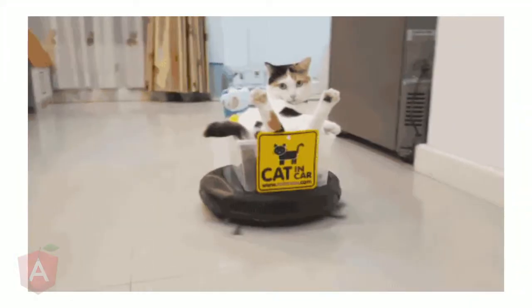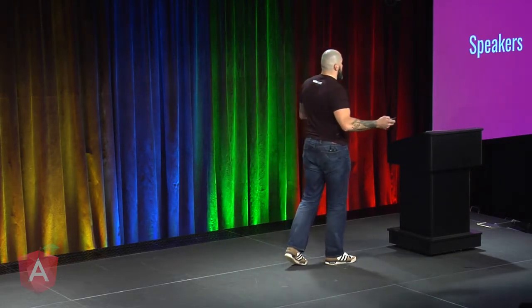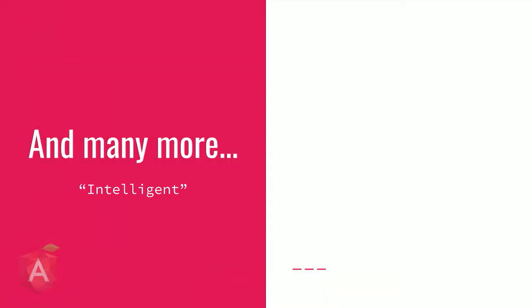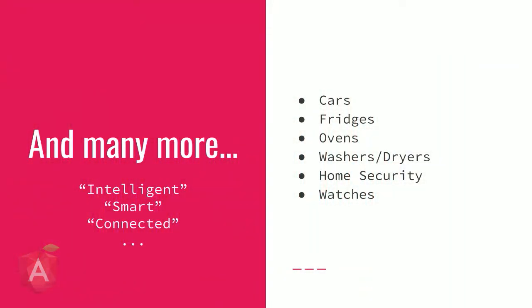There's also speakers — Alexa, Google Home, these kinds of things. There are many applications they come with; that's actually the most resourceful application, because you can now do your shopping, have games running, play music, review the news, and countless other things. So anything deemed intelligent, smart, or connected basically means they are using, to some extent, some Internet of Things capabilities — cars, fridges, ovens, washers, dryers, home security, and watches.